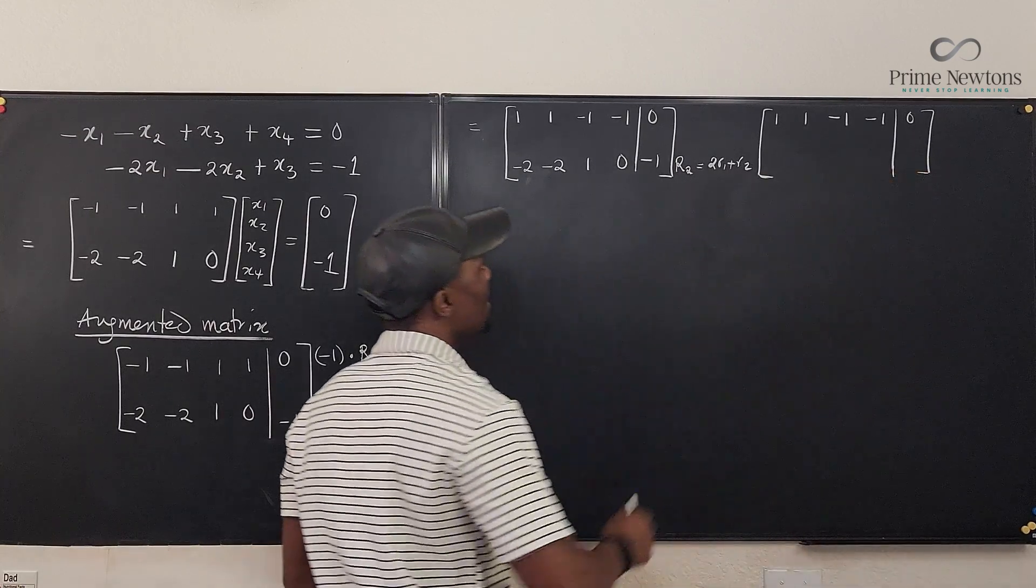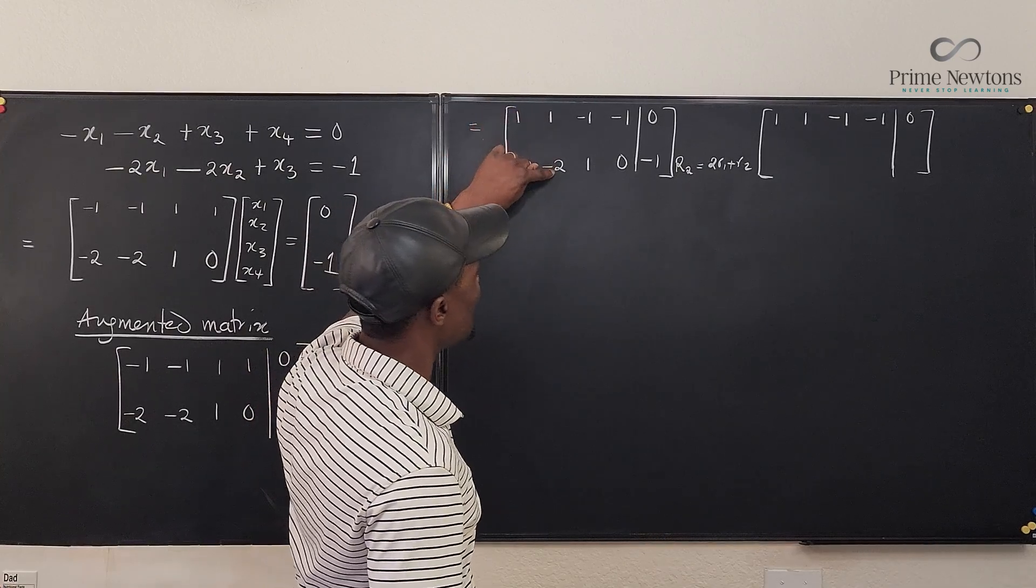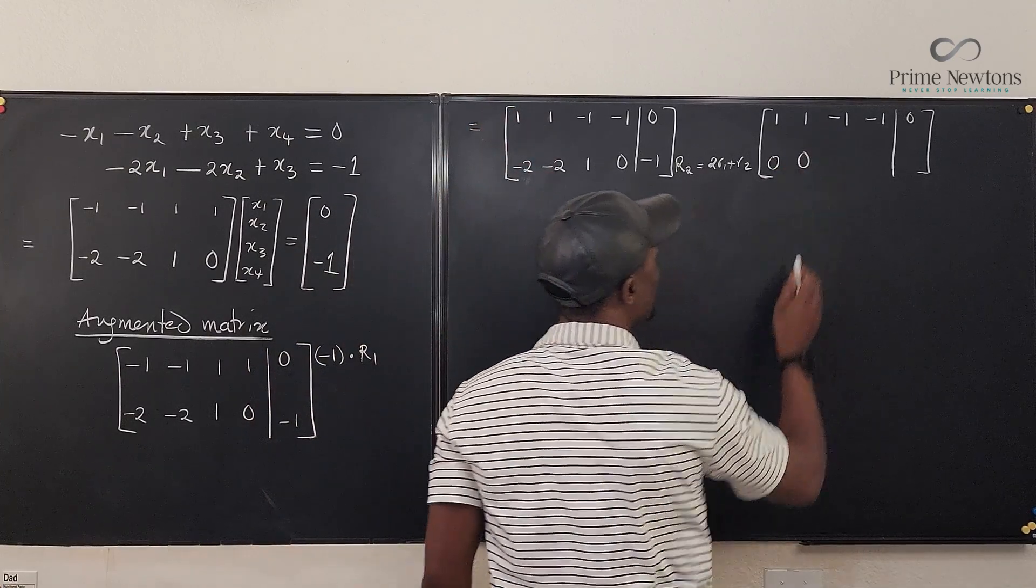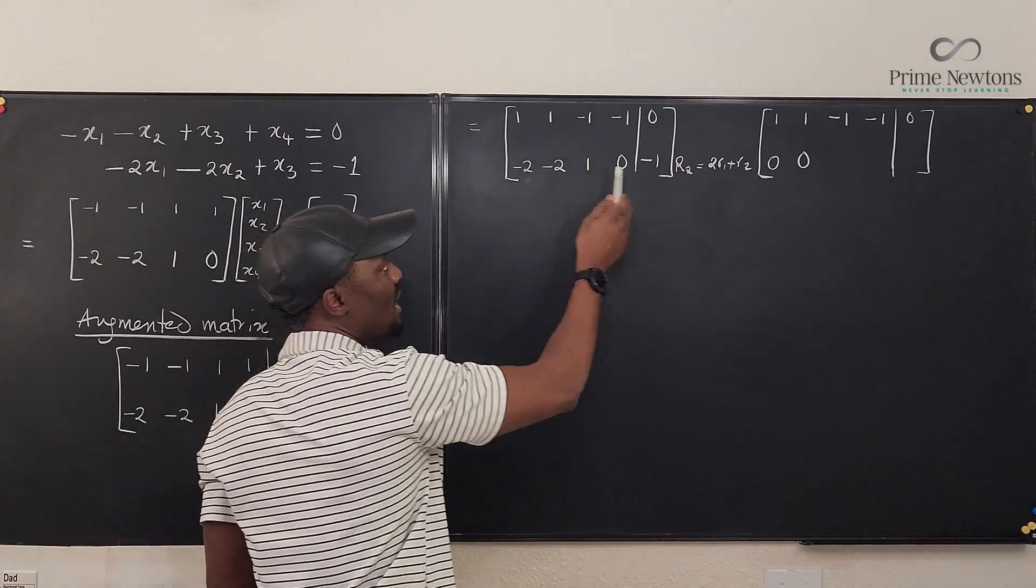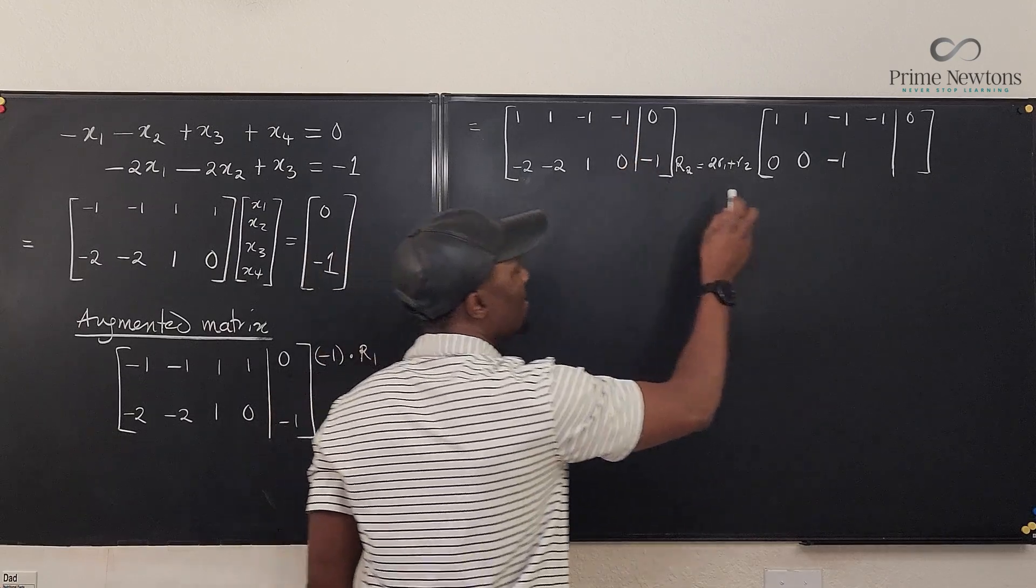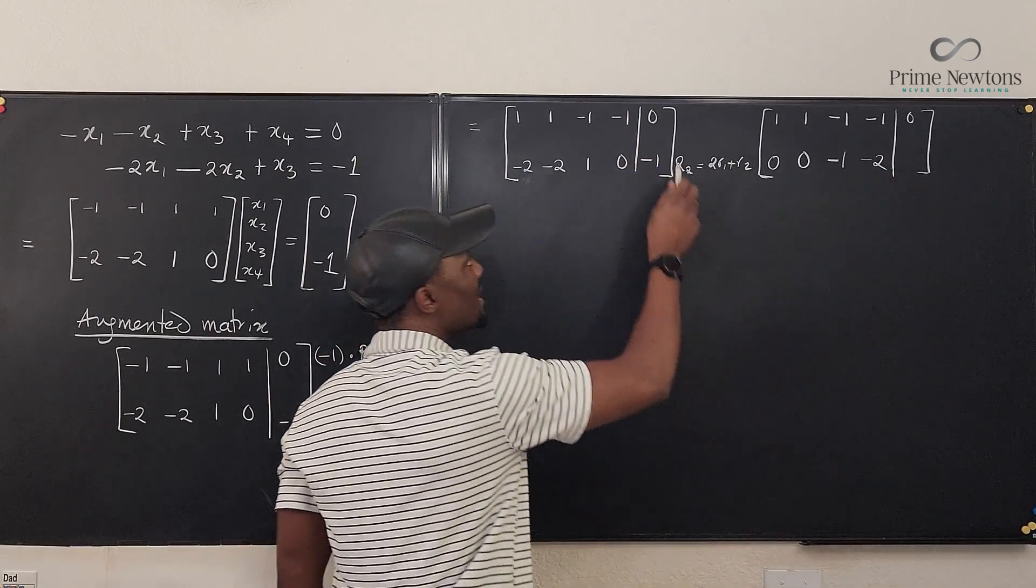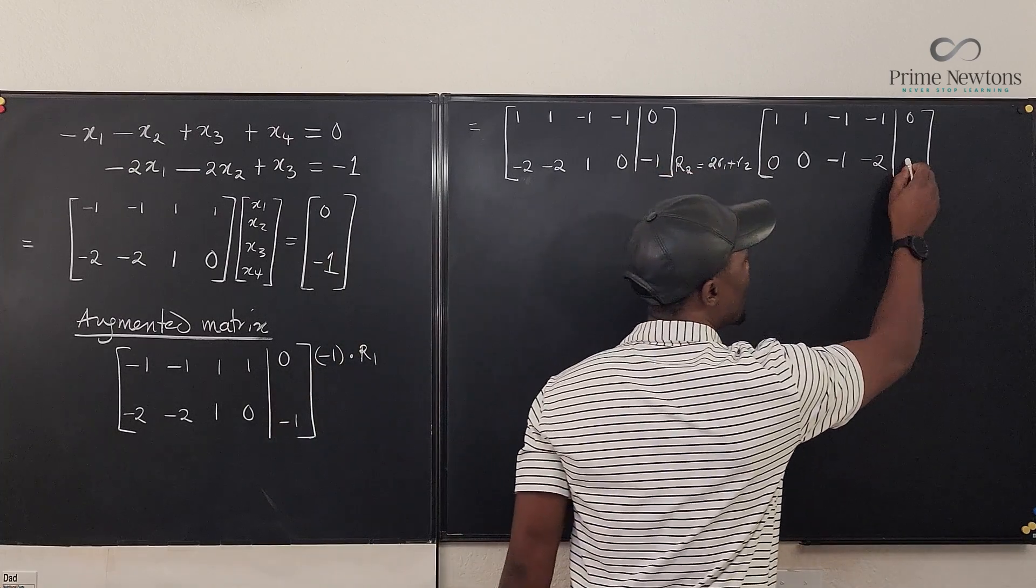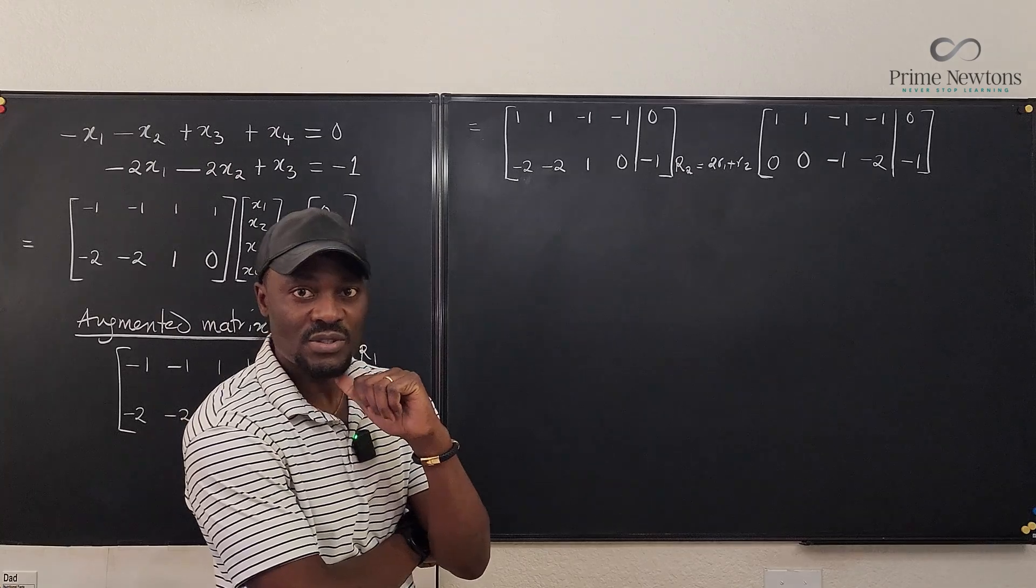So what happens down here? If we add two of this to this, we get zero. If we add two of this to this, we get zero. So this is going to be zero, zero. Hmm. Interesting. If we add two of this to this, we get minus one. If we add two of this to this, we get minus two. And if we add two of this to this, we get minus one.